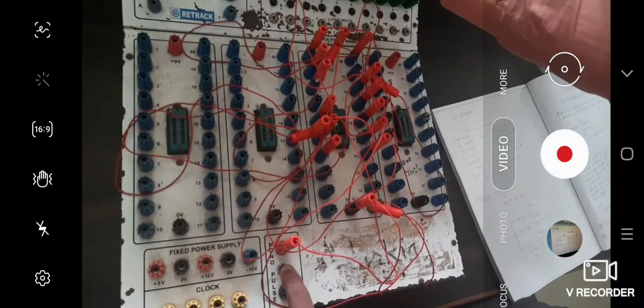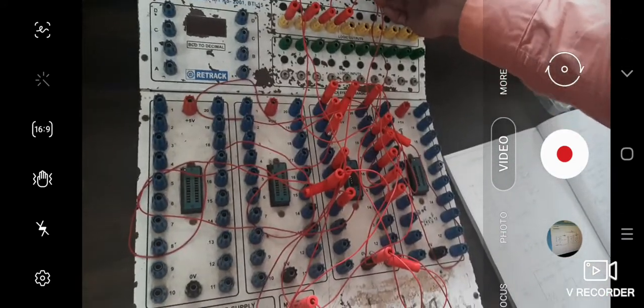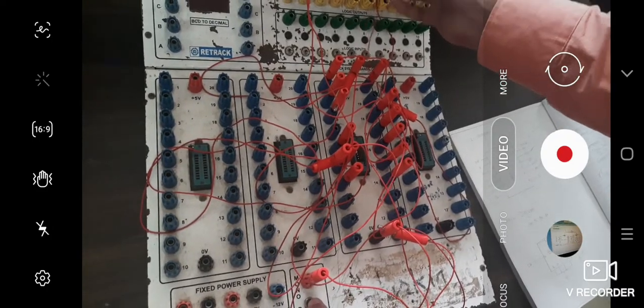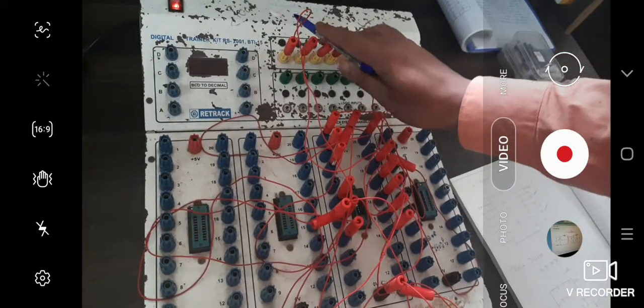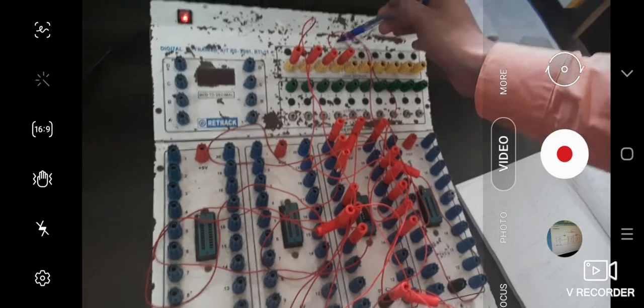Here on 8, 4, 2, 1 basis it will count. Here LSB and MSB will be there. 8, 4, 2, 1. You can check here like this.